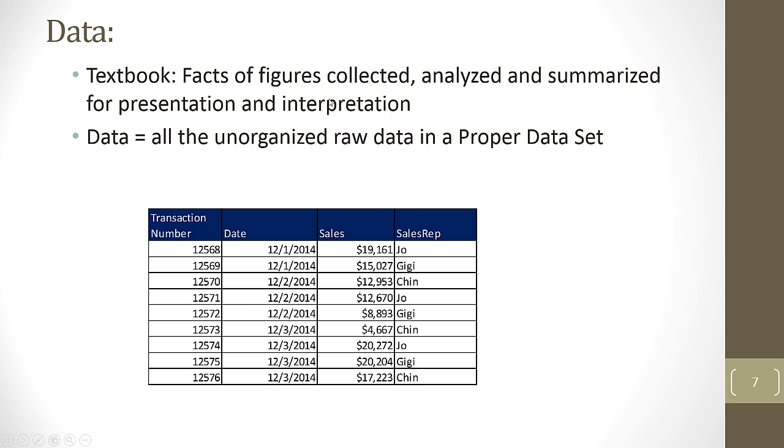Data. Data here straight from the textbook: facts or figures collected, analyzed, and summarized for presentation and interpretation. Another way to think of data, it's all the unorganized raw data in the proper data set. We have our field names at the top. Each record or observation has four bits of raw data. Before we go on to define a proper data set, I want to go over to Excel and talk about data types and default alignment in Excel.